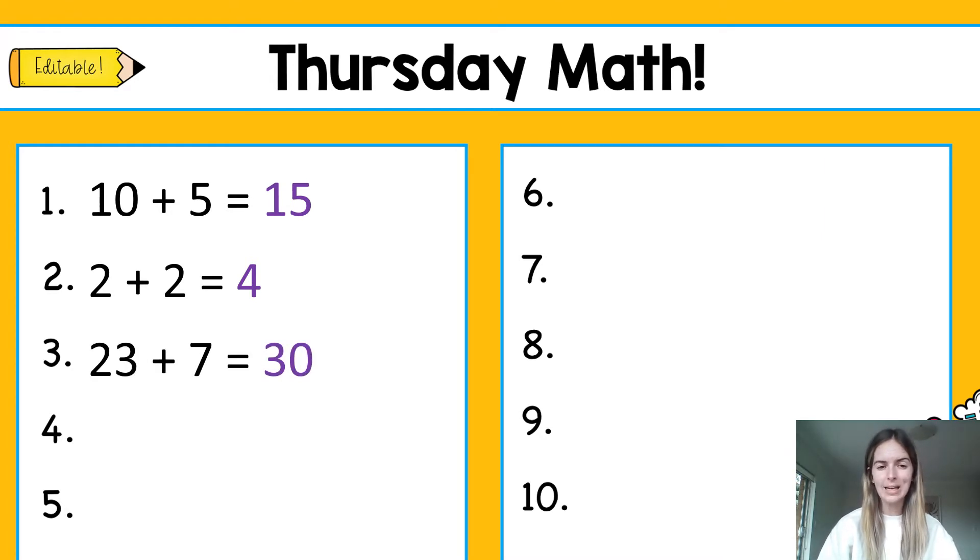Question 3: 23 plus 7 equals 30. So let's put that big number in our head: 23, 24, 25, 26, 27, 28, 29, and 30. So I've added 7 and it equals 30. Question 4: 30 plus 5 equals 35. I'm going to put 30 in my head and count on: 30, 31, 32, 33, 34, and 35. Question 5 was 8 plus 4 and that equals 12. So again, 8 in our heads: 8, 9, 10, 11, 12.